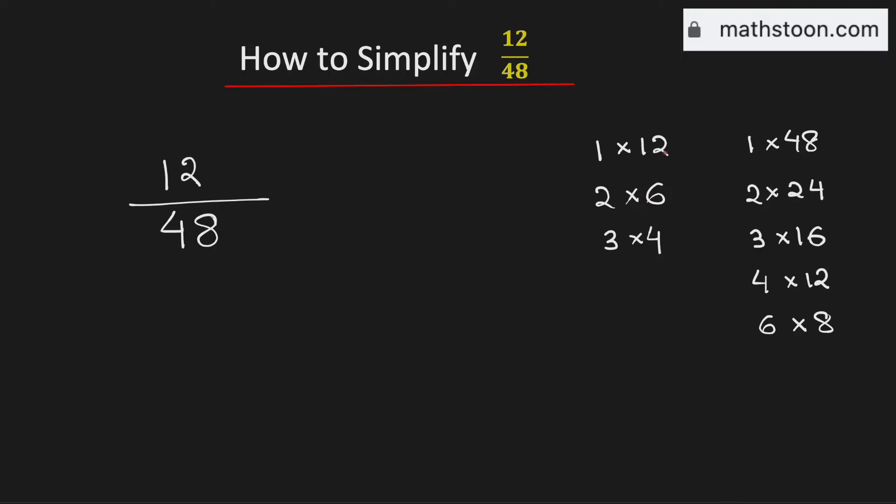See that 12 is the greatest one which is common in both these lists. Therefore 12 is the greatest common factor of 12 and 48.